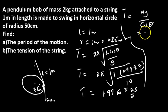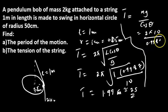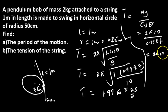The tension in the string comes from T = mg / cosθ. With m = 2 kg, g = 10 m/s², and cosθ = 0.9987, this gives approximately 20.03 N, which is approximately 20 newtons.